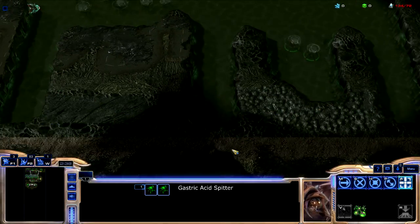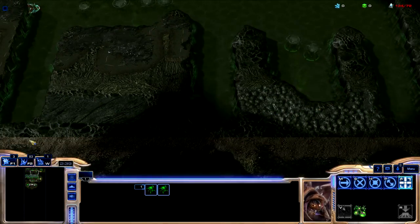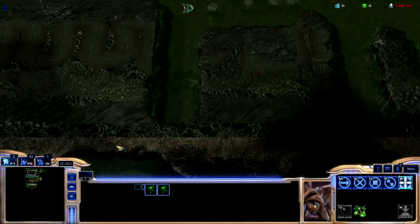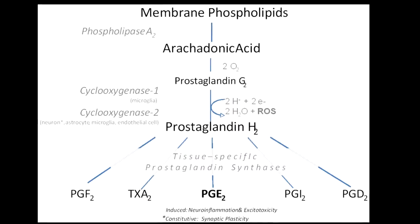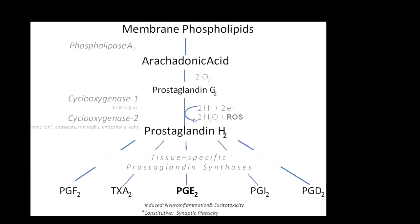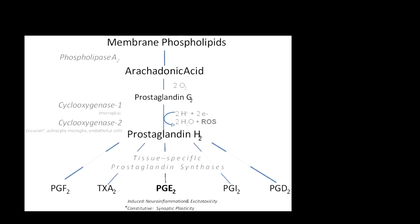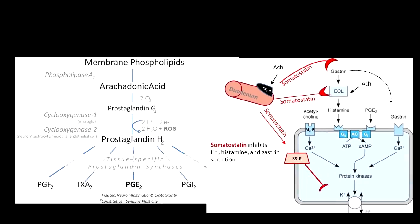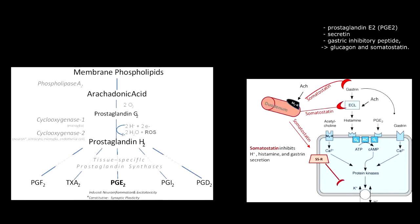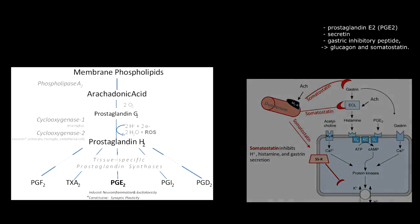As a consequence, the parietal cell and the mechanisms used to secrete acid are often targets for treatment. To treat acid reflux, there are a variety of substances capable of reducing gastric acid secretion, including prostaglandin E2 and several peptide hormones, including secretin, gastric inhibitory peptide, glucagon, and somatostatin.